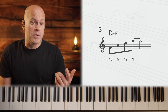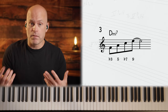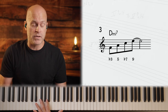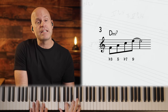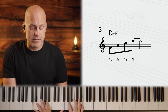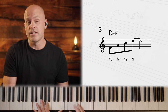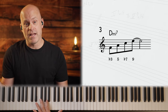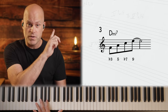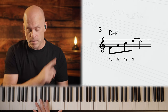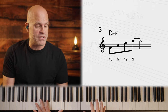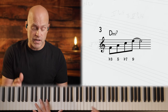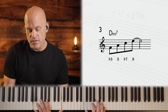Number three is just a minor nine arpeggio, but it's a great springboard when you're playing over a minor chord. In the key of C, that's D minor seven — the two chord in a 2-5-1. It's just a simple 3, 5, 7, 9 arpeggio starting on the third.